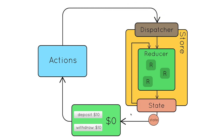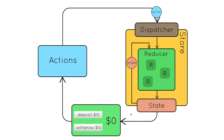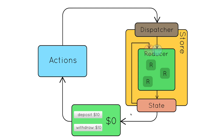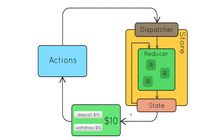If you are using Redux DevTools, you can actually debug and time travel through the Redux state. For example, the account balance started at zero dollars, then went to 10, 20, 30, then a deduction brought it to 20, 10, and zero. You can do time travel debugging with Redux DevTools, which gives you the complete timeline of your Redux state. This is possible because reducers are based on pure functions, returning a new state every time without updating the current state.